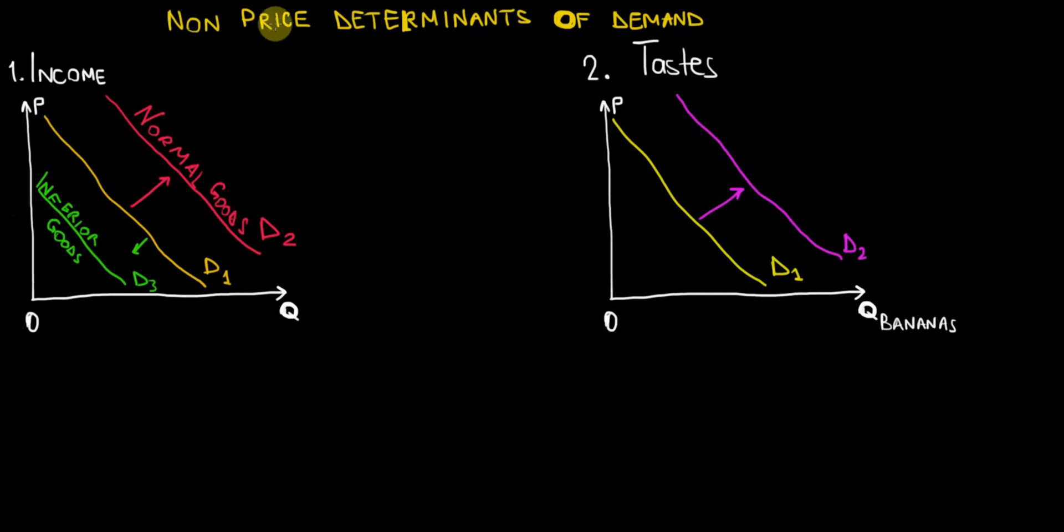In this video, I would like to start talking about the non-price determinants of demand. We will discuss factors that cause shifts in the demand curve. In the previous video, we discussed the differences between movements along the demand curves and shifts of the demand curves. Now we want to see what causes those shifts.